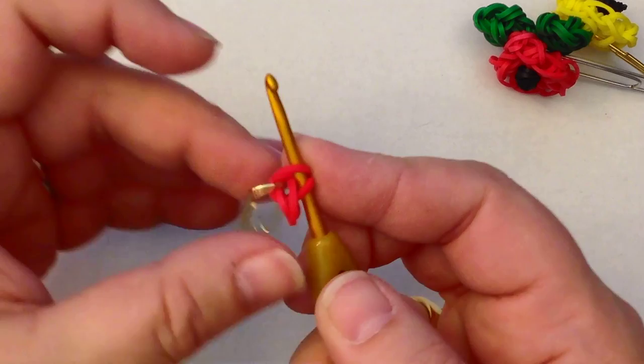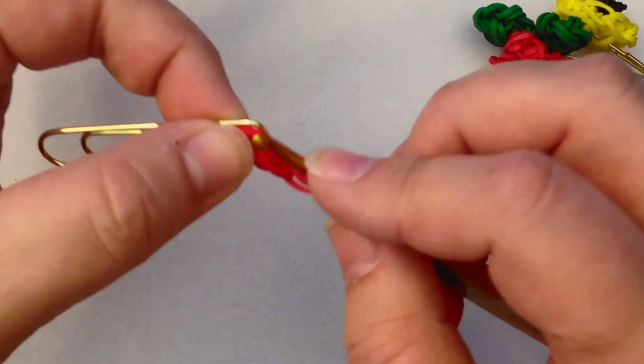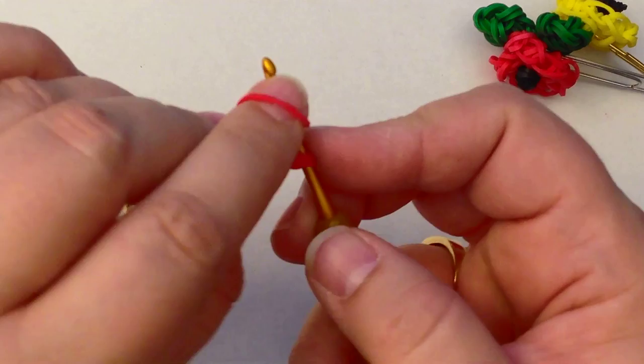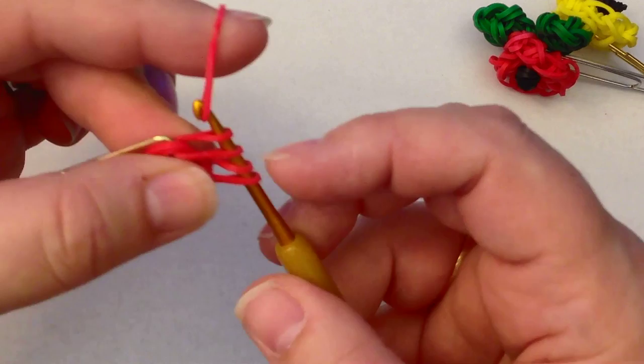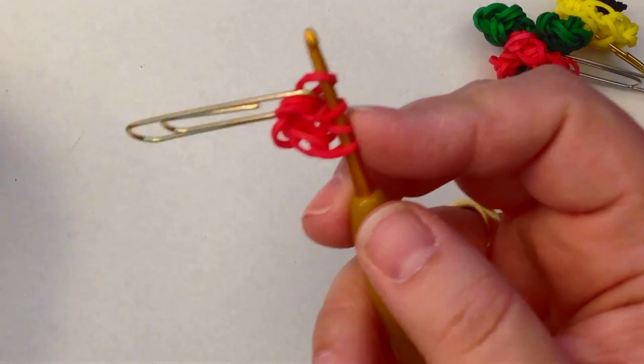Then we're going to do that again. So your little end cap is attached to your paperclip. Go back through the end cap and the paperclip and you're going to pull a red band, a single red band, through and then you're going to link those four loops that are on your hook together with a red band. Let's go through it again, pull it through, link them together.